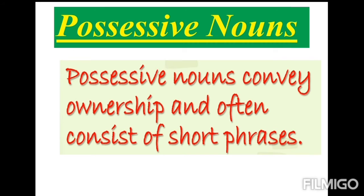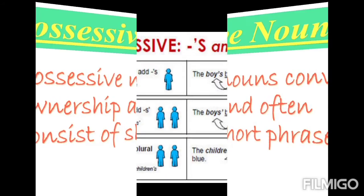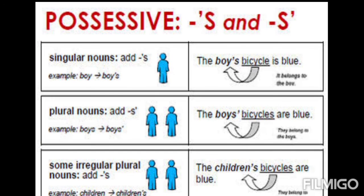Let's see about possessive nouns. What is meant by possessive nouns? Possessive nouns convey ownership and often consist of short phrases. We can classify possessive nouns into two types: singular nouns and plural nouns. In singular nouns, we add an apostrophe before the letter S. In plural nouns, we add an apostrophe after the S.